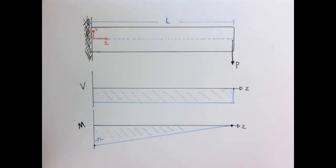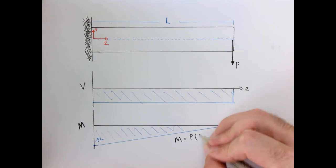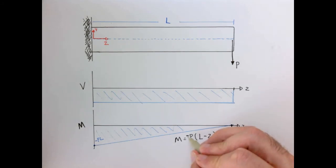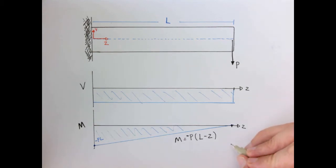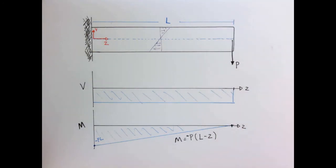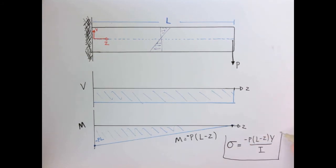The moment can be written as a function: M = P(l − z). We can check this has the right behavior — when z equals zero we get P·l, and when z equals l we get zero. So this works. This bending moment means that the normal stresses in the beam have that linear internal normal stress distribution we see in pure bending.